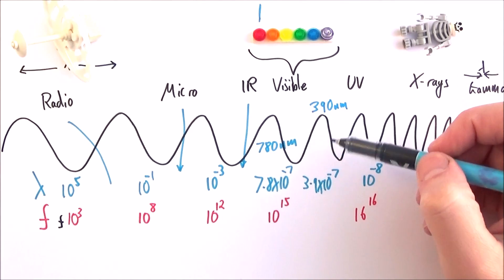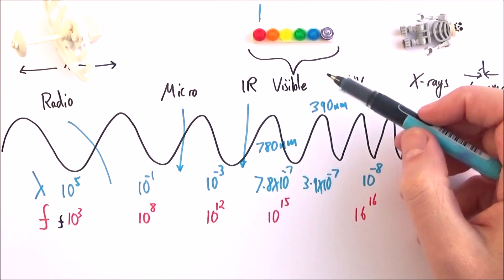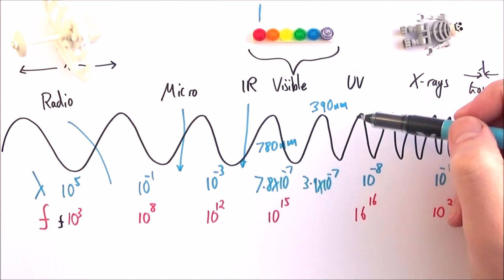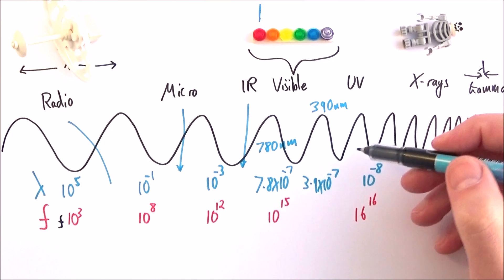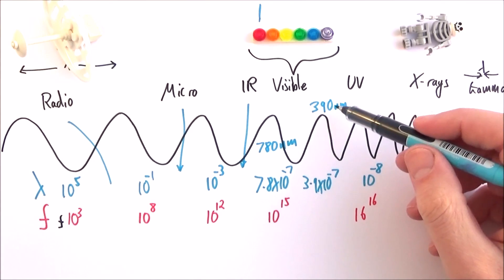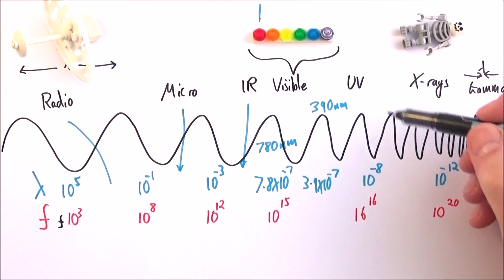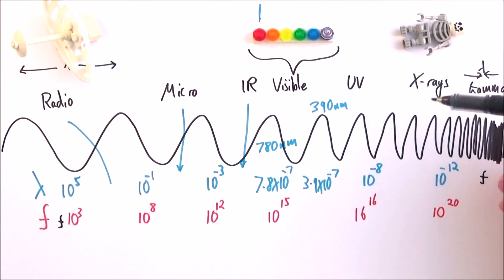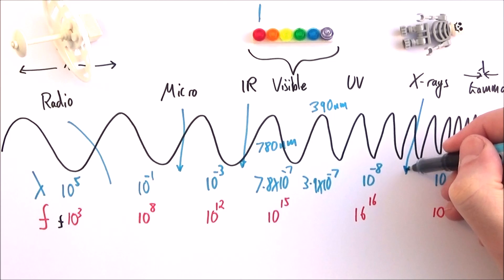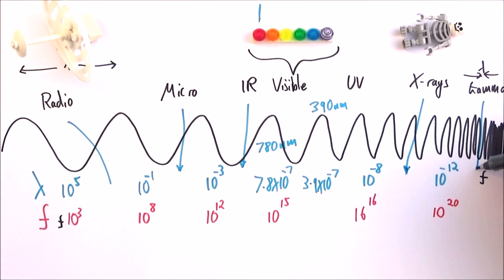And the violet is about 390 nanometres. After that becomes something that, again, we can't see. It can be quite damaging to our eyes and our skin. And then it's ultraviolet. So ultraviolet goes from about 390 nanometres up to about 10 to the minus 8 metres. X-rays, 10 to the minus 8 to 10 to the minus 12.